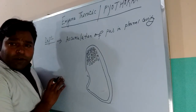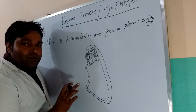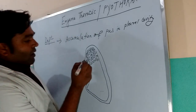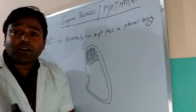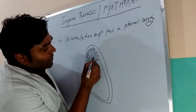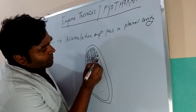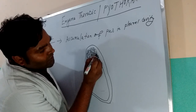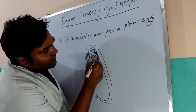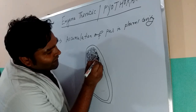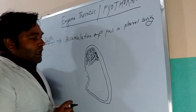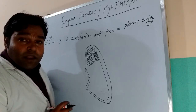In about 70 percent of cases, it is pneumonia which leads to pyothorax. Pneumonia is inflammation and infection of the lung alveoli, in which the alveoli of the lung are filled with pus and become consolidated. When all the alveoli get filled with pus, the alveolar membrane will irritate the visceral layer of the pleura.